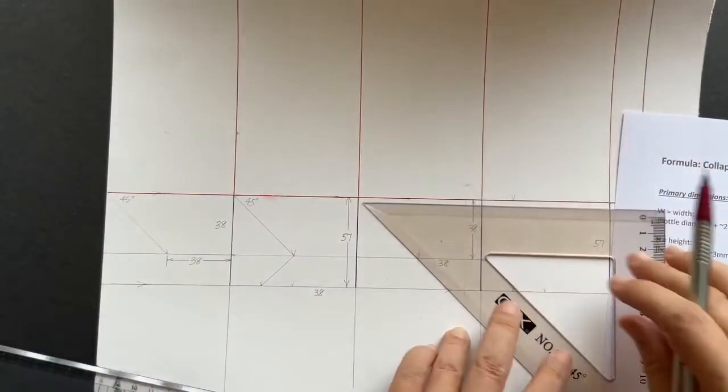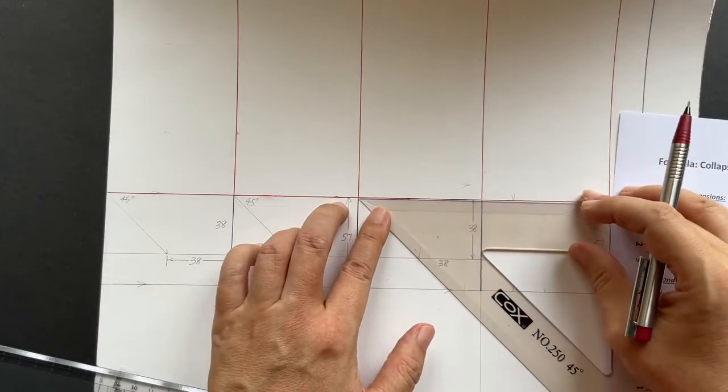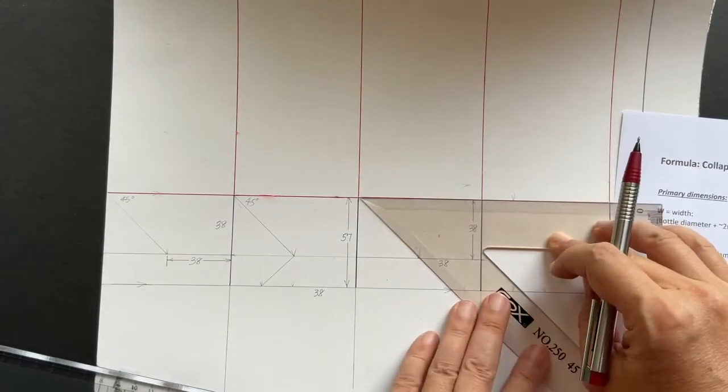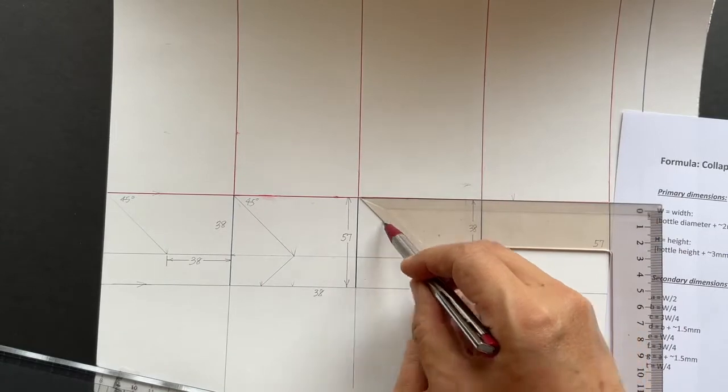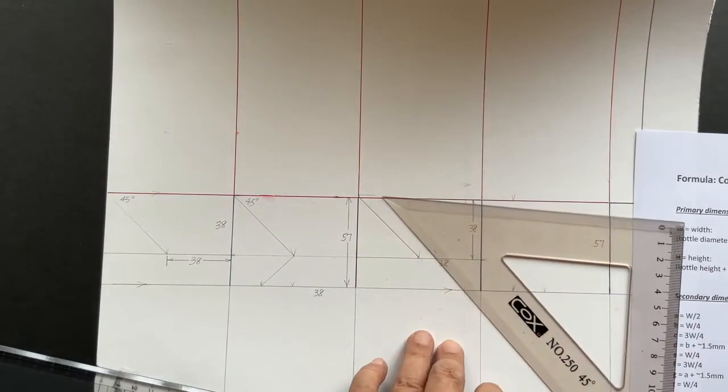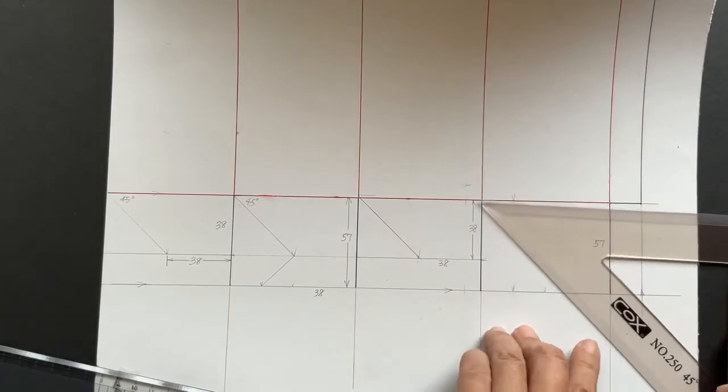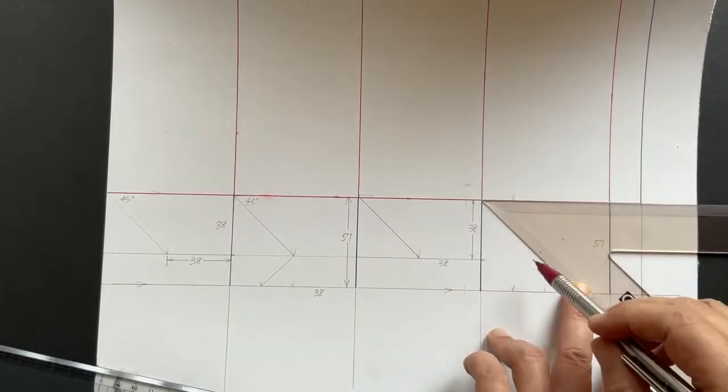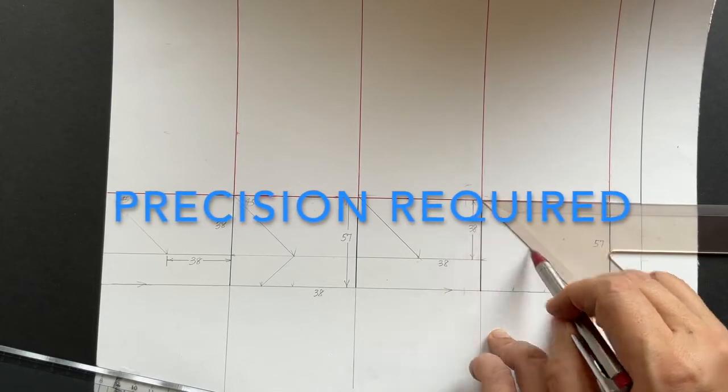Using this 45 degree triangle, if the center point and the corner tip are aligned, like shown here, then you're good. If it's not, the folding action of the bottom won't work very well. Precision is required.